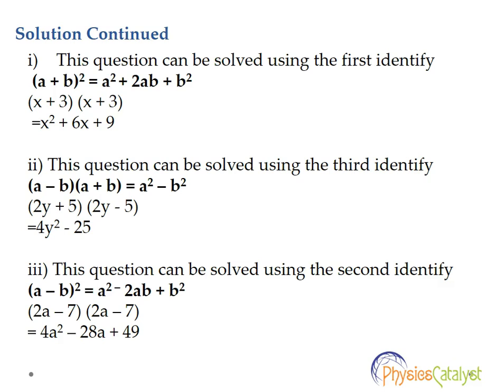Part 3. Here the question is (2a - 7)(2a - 7). We have used the second identity here, which says (a - b)² = a² - 2ab + b². So the answer here would be 4a² - 28a + 49.